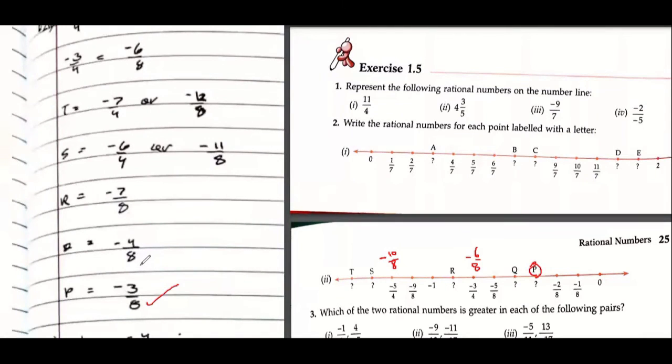Two is minus four upon eight, five, six, R is minus seven upon eight. Minus eight upon eight, this will be minus one. Minus nine, minus ten, minus eleven upon eight, and minus twelve upon eight.